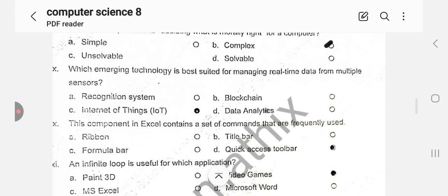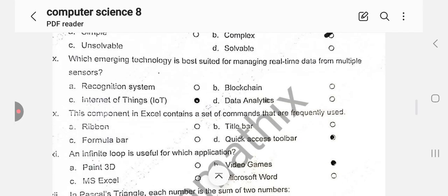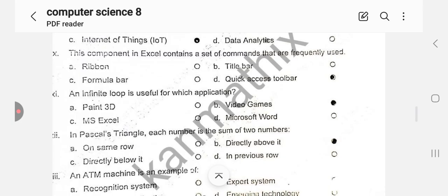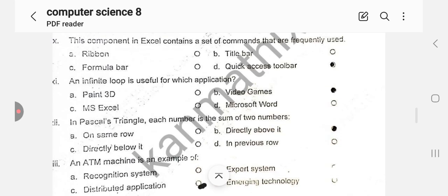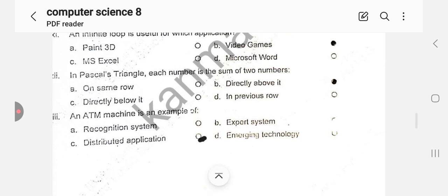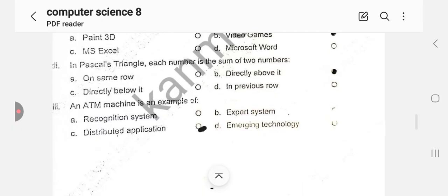Which emerging technology is best suited for managing real-time data from multiple sensors, option C is correct. This component in Excel contains a set of commands that are frequently used, option D is correct. An infinite loop is used for which application? Video games, option B is correct. In Pascal triangle each number is the sum of two numbers, option B is correct. An ATM machine is an example of distributed application, option C is correct.